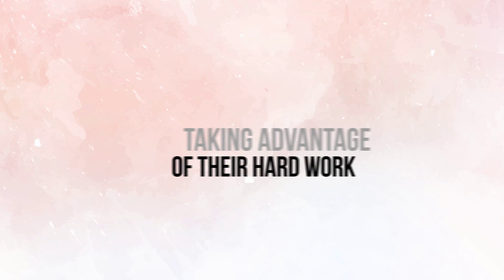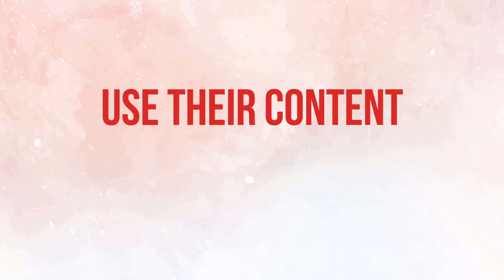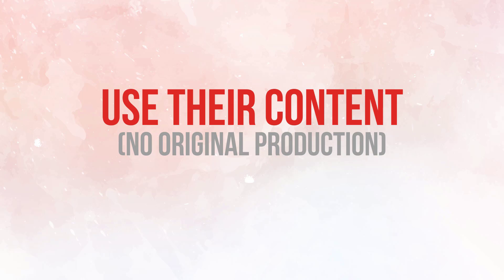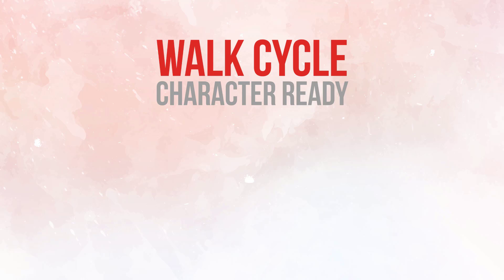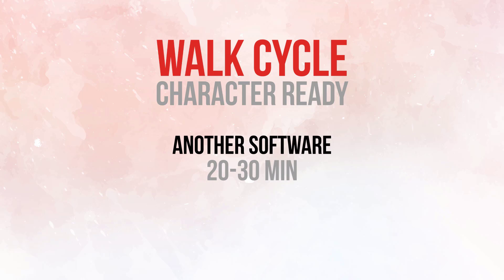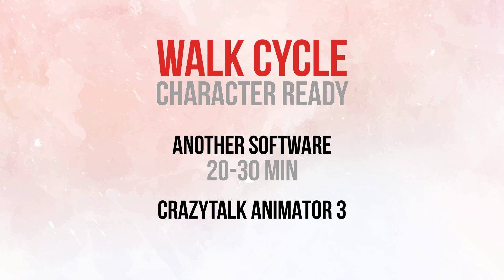Do you want even faster? You can use the content they provide — that means you use the characters they created for you. If you do that, you will animate 10 times faster. You don't believe me? Let me prove it. Let's talk about animating a walk cycle. Let's say your character is already rigged and ready. Using other software, it takes around 30 minutes. In Crazy Talk Animator, it takes three minutes.